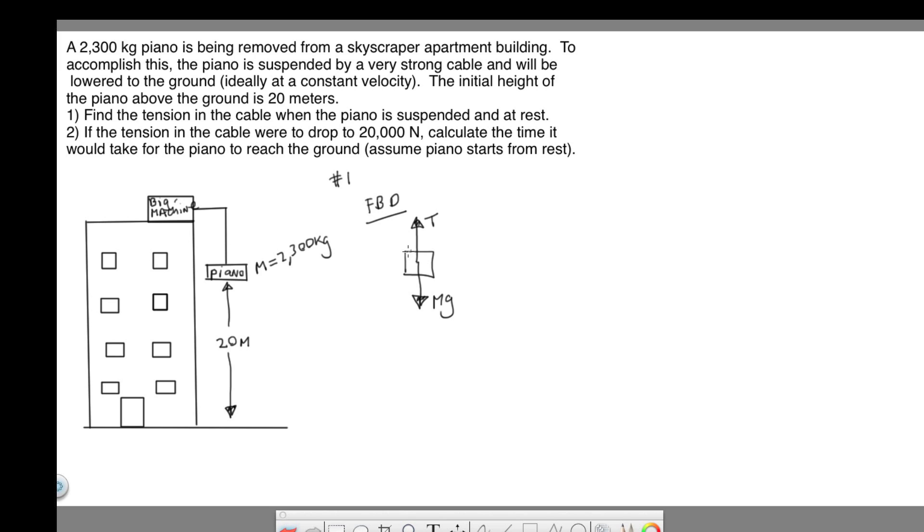There's no normal force here because the piano is not on a surface. So this is our free body diagram. And our sign convention is down negative, up positive. That's always important.